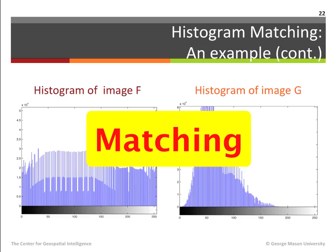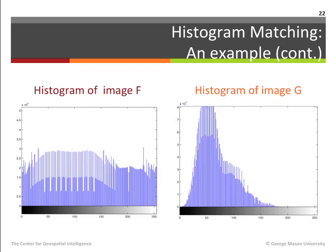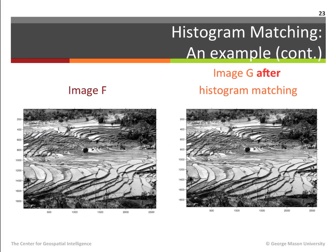It is important to note that since an optimization process is applied, the histogram of image G after the matching process may not be completely identical to the histogram of image F. Having said that, the histogram of image G after the matching process will resemble the histogram of image F, resulting in an image that is visually very similar to image F. The results of the histogram matching process are shown here: on the left image F, and on the right image G after histogram matching. As you can see, this result is very similar visually to image F, as both images have a similar average gray level and contrast. In fact, in this case finding any differences between the images by visual inspection alone would be a challenging task.